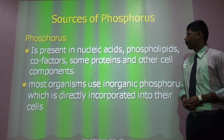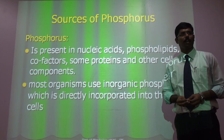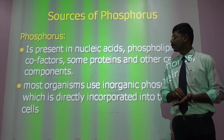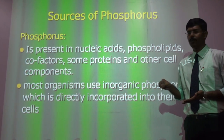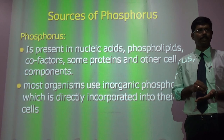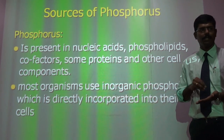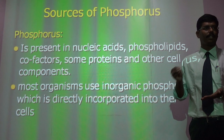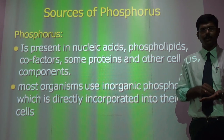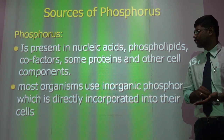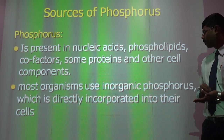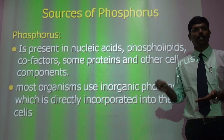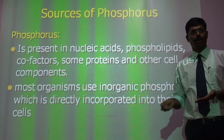Regarding sources of phosphorus: all the genetic material of living organisms is made up of phosphorus. This phosphorus is part of phospholipids, proteins, and co-factors, which are necessary for the growth and respiration of the organism and for bringing in nutrition from the outer environment. Most organisms use inorganic phosphorus, which comes from decayed cell matter.